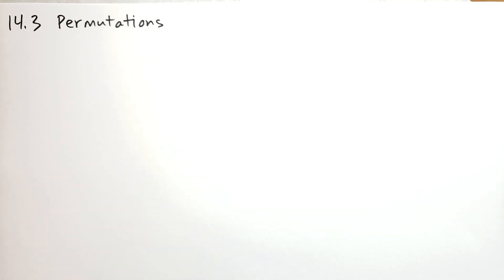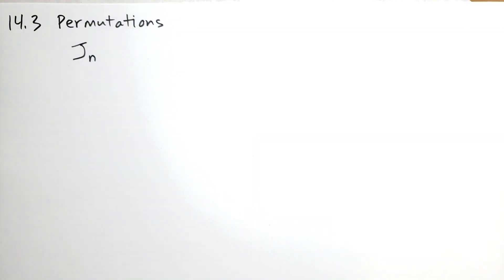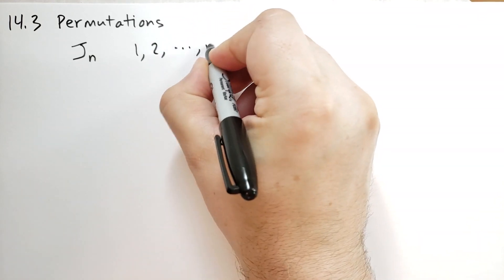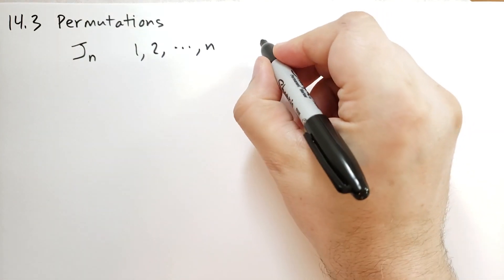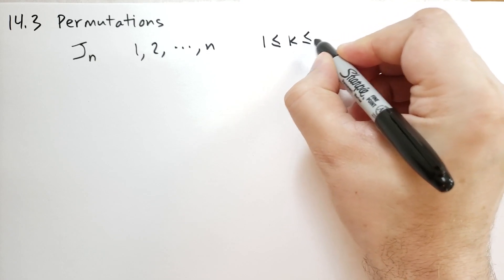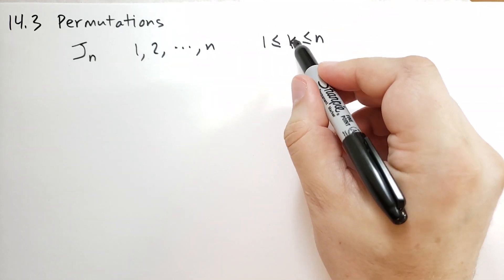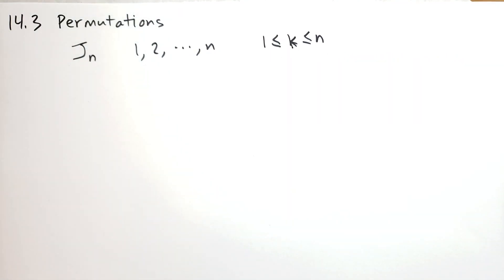Anyway, let's get started. Let J sub N be the set of integers 1, 2, all the way up to N — so it's a subset of the integers, where 1 ≤ K ≤ N. So J of N has elements K such that it includes 1, it includes N, and it includes all the integers in between.